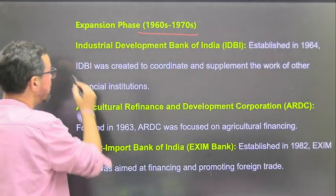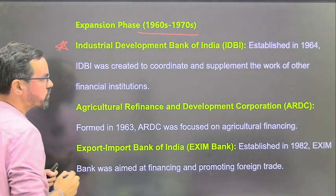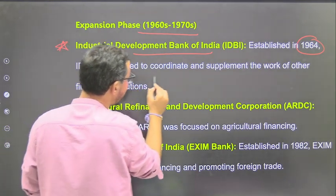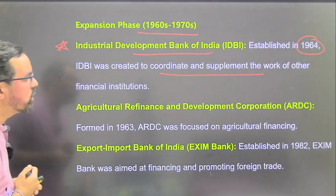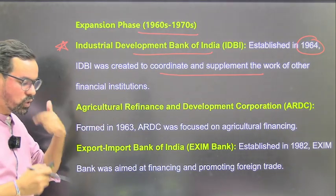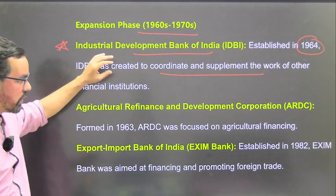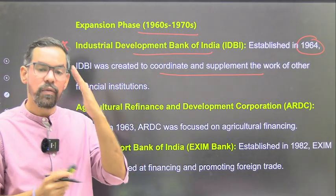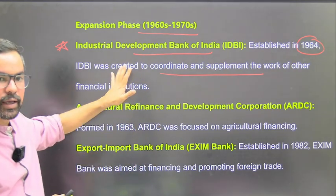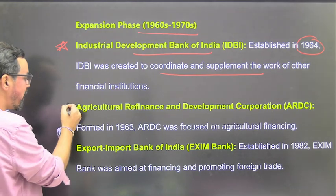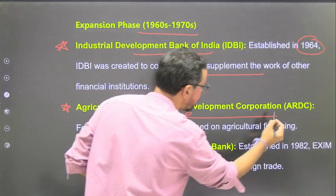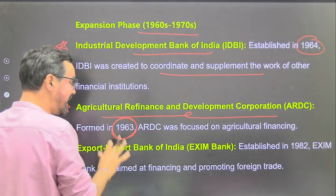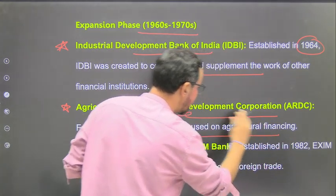IDBI was a development bank until 2004, when it was converted into a commercial bank and started accepting deposits from customers. Then we have Agriculture Refinance and Development Corporation - ARDC - now known as NABARD. In 1963, ARDC was focused on agriculture and allied areas. EXIM Bank - Export Import Bank - was established in 1982. With EXIM, India set up the trade finance sector, basically helping finance exports.